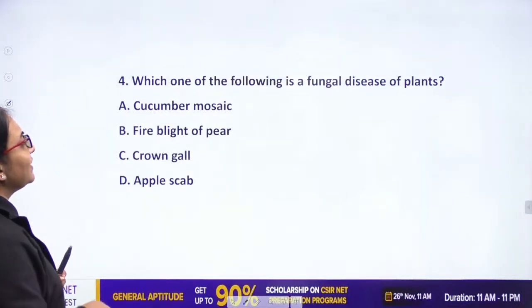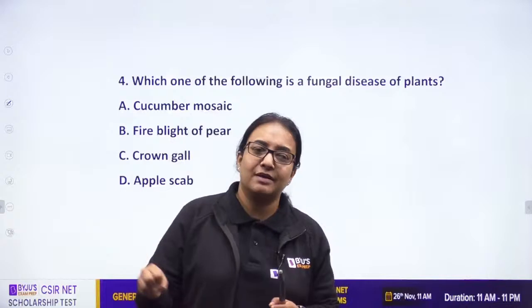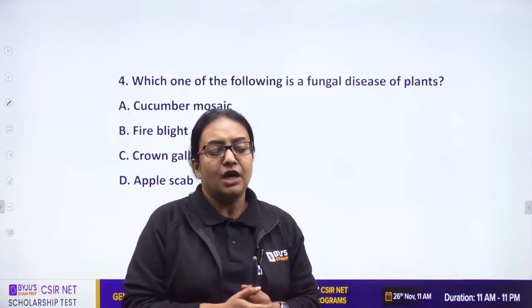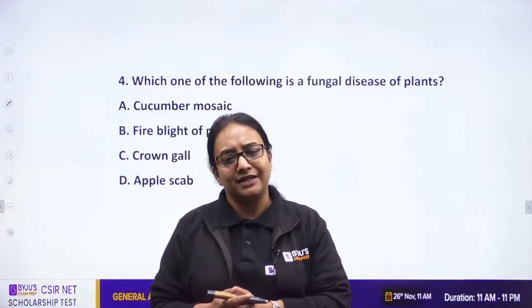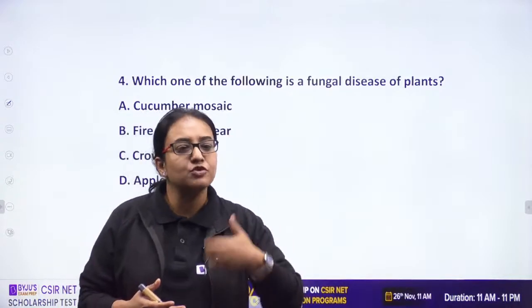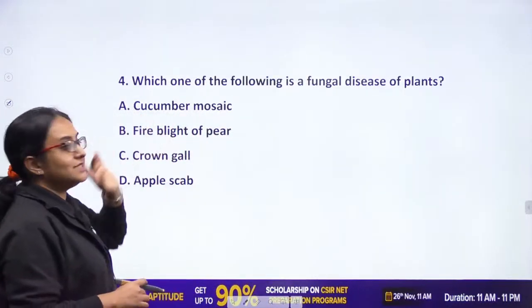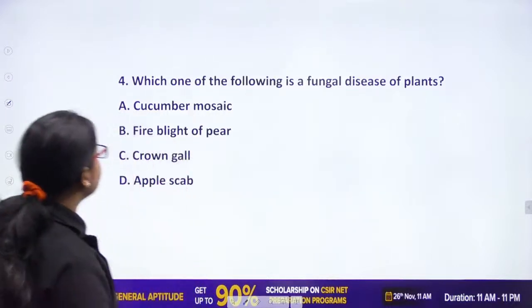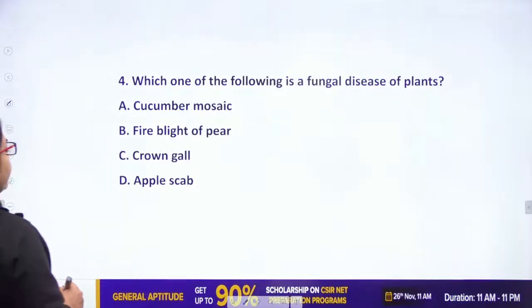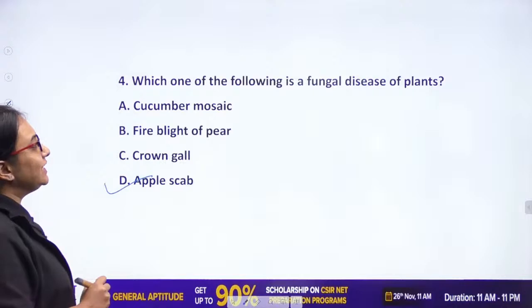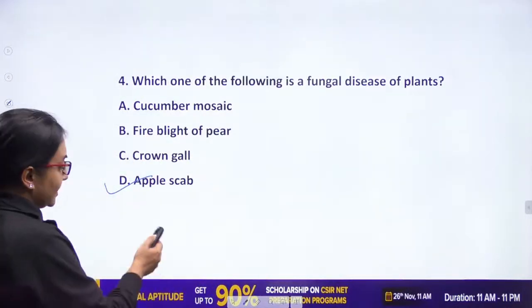Next question: 'Which one of the following is a fungal disease of plant?' This comes from Unit 9 — organisms of health and concern — where we study tables of fungal, parasitic, and bacterial diseases in humans and plants. The answer is apple scab — it is a fungal disease found in plants.